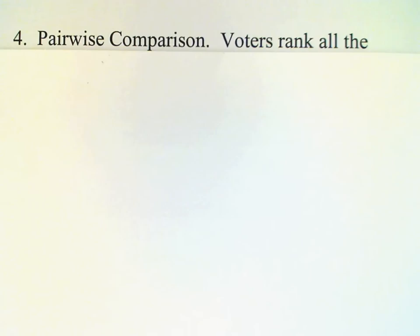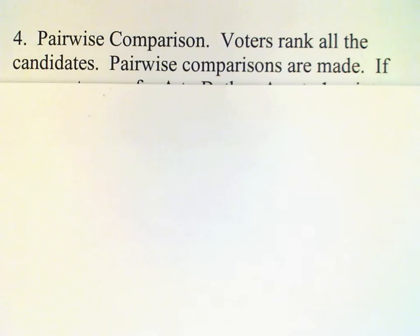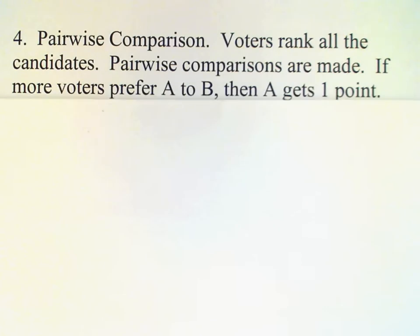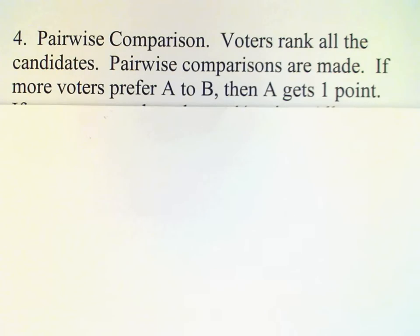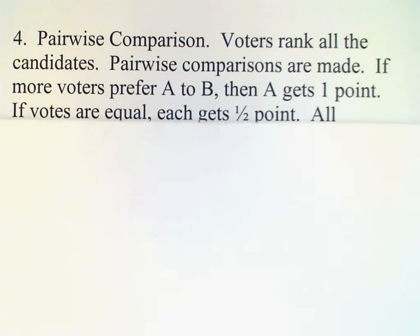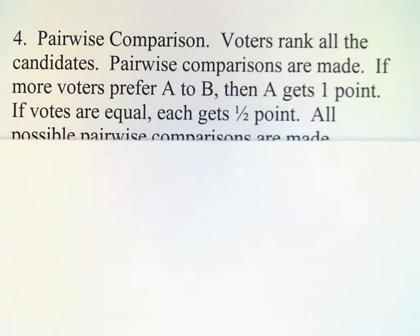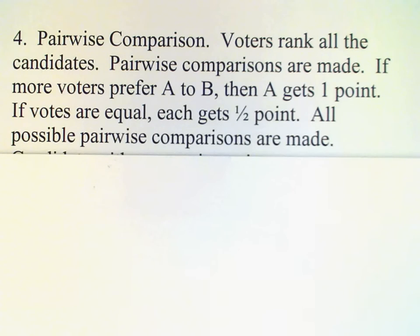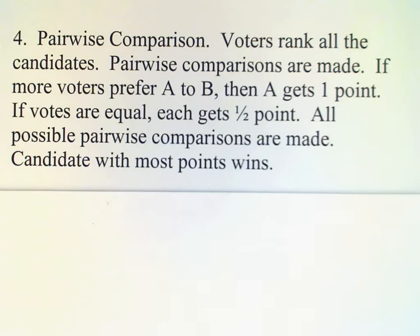The last voting method we're going to look at is called pairwise comparison. Voters rank all the candidates and then the candidates are compared by pairs. For example, in comparing candidate A with candidate B, if more voters prefer A to B then A would get one point. If the votes happen to be equal then each would get a half a point. All possible pairwise comparisons are made and then the candidate with the most points wins.